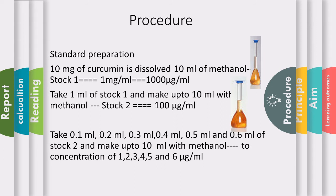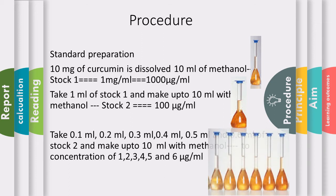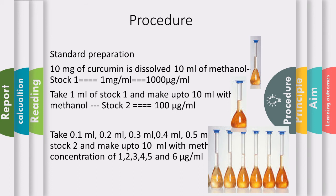From stock 2, we will prepare different concentrations for measuring absorbance. We will take 0.1 ml, 0.2 ml, 0.3 ml, 0.4 ml, 0.5 ml, and 0.6 ml of stock 2 and individually make up to 10 ml with methanol to get concentrations of 1, 2, 3, 4, 5, and 6 microgram per ml. Since stock 2 is 100 microgram per ml, taking 0.1 ml gives 10 micrograms made up to 10 ml, giving 1 microgram per ml. As the concentration increases, the intensity of the color also increases, and there will be an increase in absorbance.